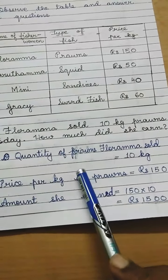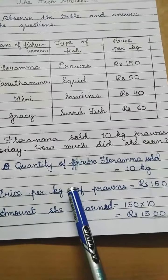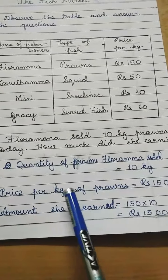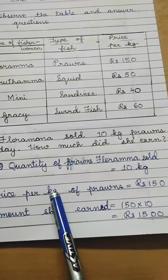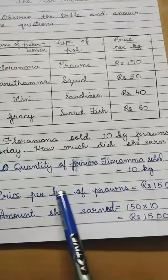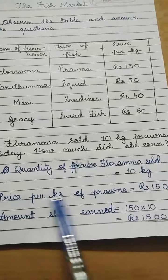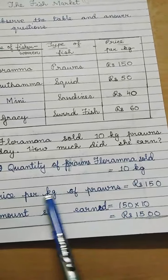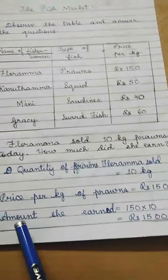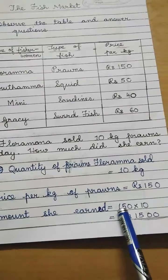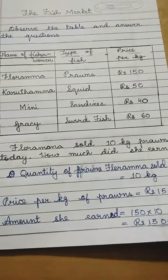This type of sum in maths is called the unitary method. Don't be scared of this word — it will keep coming. Unitary means 'from one unit' — the price of one is given, so what will the price of more be? So 1 kg is ₹150, and we need the price of 10 kg. The amount she earned will be 150 × 10 = ₹1500.